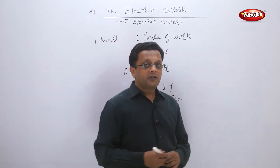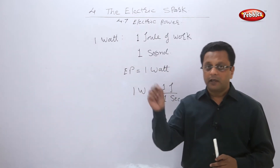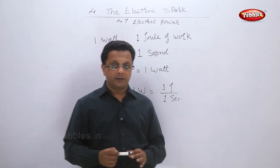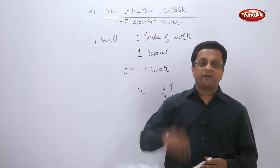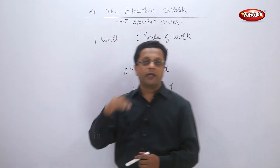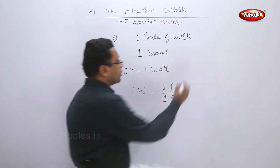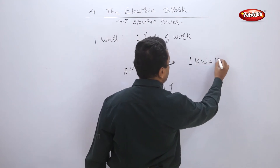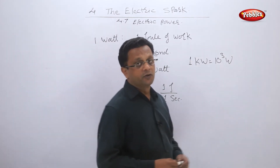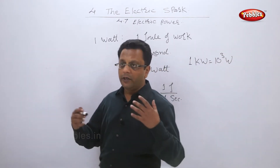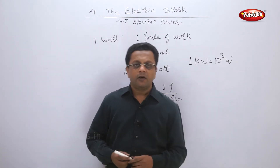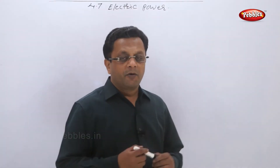On your mixer, electric iron, or electric heater, the rating is generally written in kilowatts, not watts. The unit prefixes are: kilo, mega, giga, tera above, and milli, micro, nano, pico below zero. One kilowatt equals 10 raised to 3 watts; mega is 10 raised to 6; giga is 10 raised to 9; tera is 10 raised to 12. So appliances may show 1000 watts or 1 kilowatt.